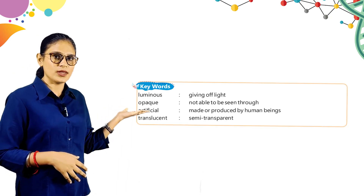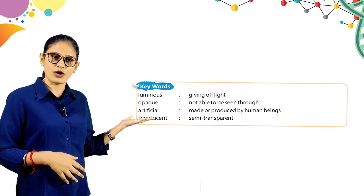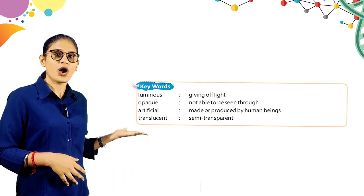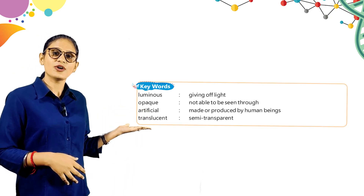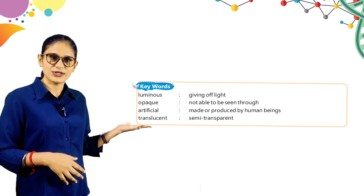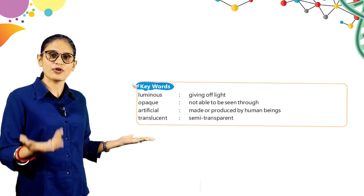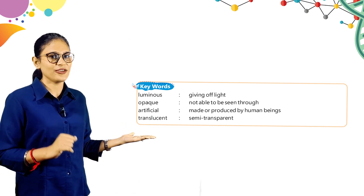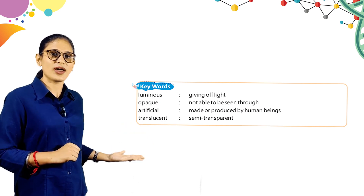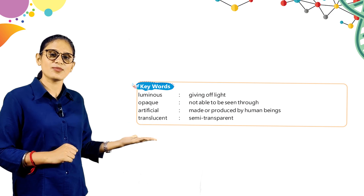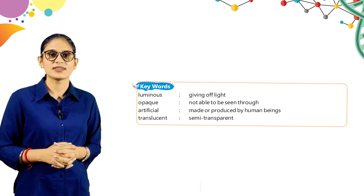Here are some key words: Luminous — giving off light. Opaque — not able to see through. Artificial — made or produced by human beings. Translucent — semi-transparent. Thank you students — we will meet again in the next chapter.